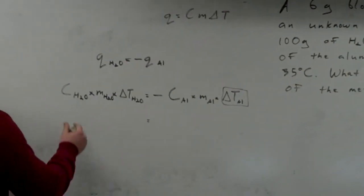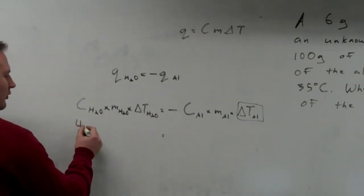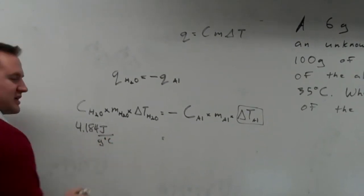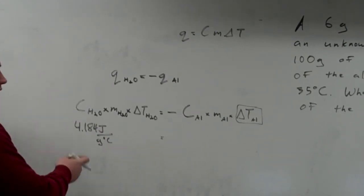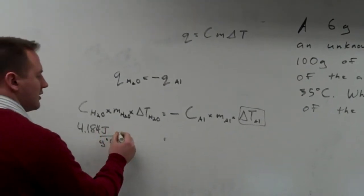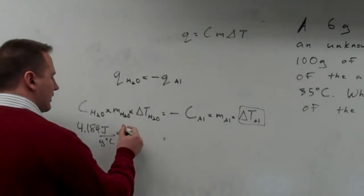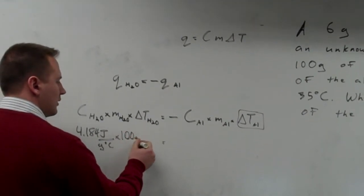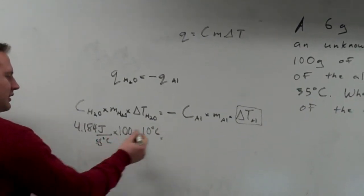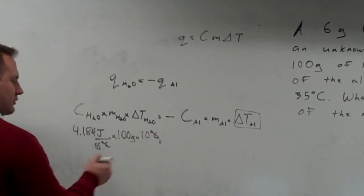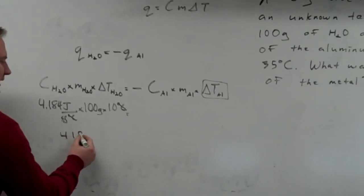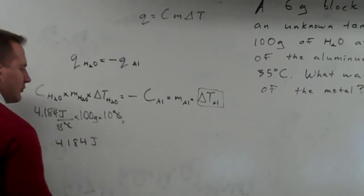Plugging in the values: the specific heat of water is 4.184 joules per gram degree Celsius — that's how much energy it takes to raise 1 gram of water by 1 degree Celsius. We multiply that by how much water we have, 100 grams, heated up by 10 degrees. Grams cancel out and degrees Celsius cancel out, and we find that 4,184 joules are absorbed by the water.